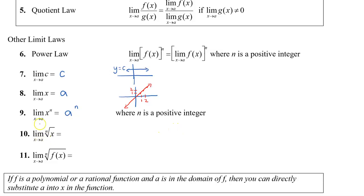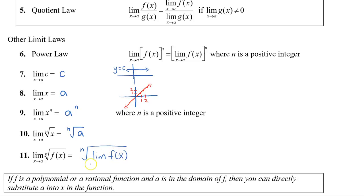Law number ten, similar to nine: if we take the limit of the nth root of x, we can take the nth root of a, and that will be our limit. And the last law: the limit of a function raised to an nth root — we can find the limit of the function first and then apply the nth root after. So we can rewrite this as the nth root of the limit of f of x as x approaches a, which gives us the nth root of f of a.